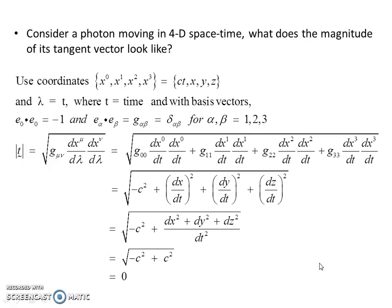So let's consider a photon moving in 4D spacetime - what does the magnitude of its tangent vector look like? Use coordinates {x^0, x^1, x^2, x^3} = {ct, x, y, z} and λ = t, where t = time, and with basis vectors e_0·e_0 = -1 and e_α·e_β = δ_αβ for α,β = 1,2,3. So again, they give us the coefficients of the metric.